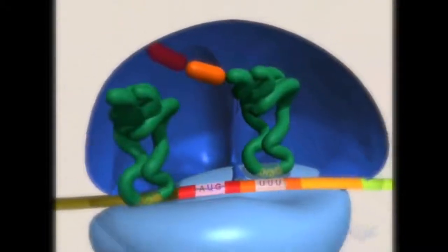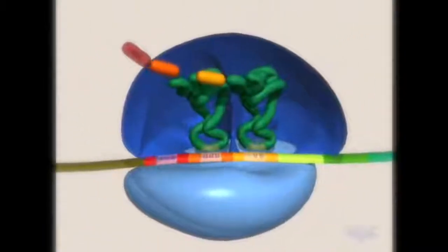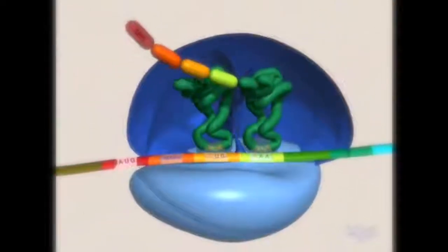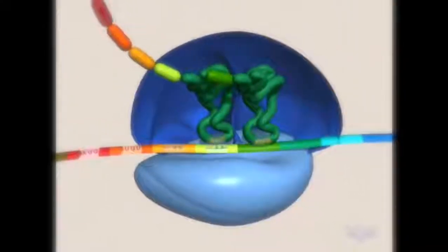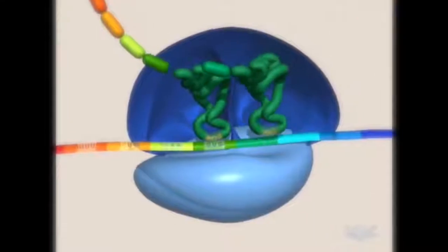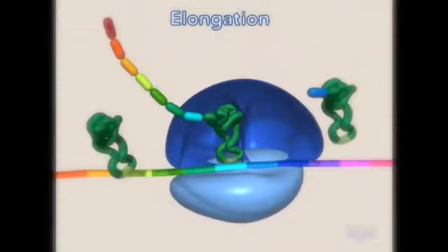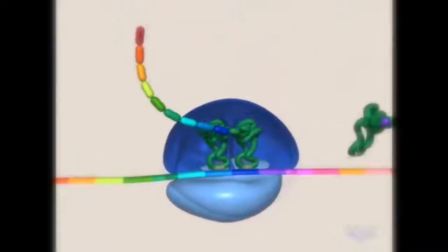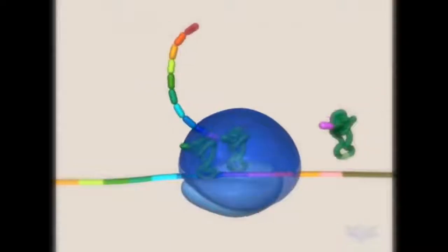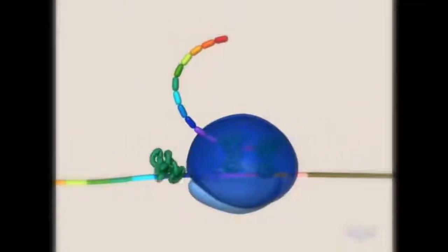The first tRNA exits, the ribosome moves along the mRNA, and the next tRNA enters. These are the basic steps of elongation. As elongation continues, the growing peptide is continually transferred to the A-site tRNA, the ribosome moves along the mRNA, and new tRNAs enter.